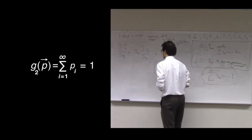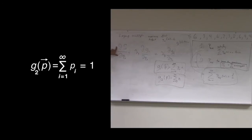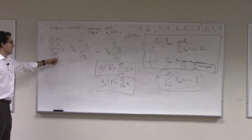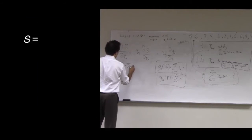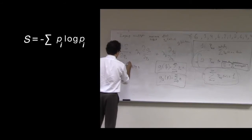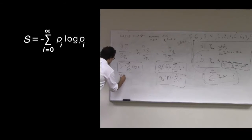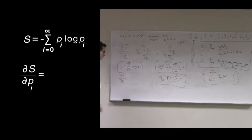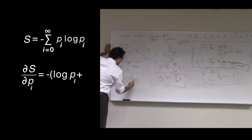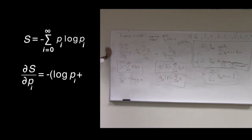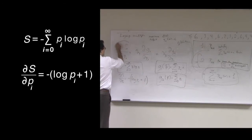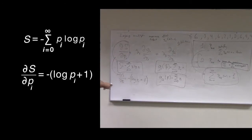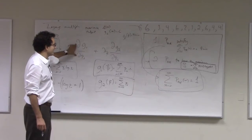What is the derivative of the entropy with respect to a particular probability? s equals negative sum of pi log pi, i from 0 to infinity. So ds/dpi: the only term that survives is where you have pi in it, and then you have the derivative of pi log pi, which has two terms — log pi, and then pi times the derivative of log pi. The derivative of log pi is 1 over pi, so you get plus 1. This is the left-hand side of your Lagrange multiplier equation. We set the base of the log to e.